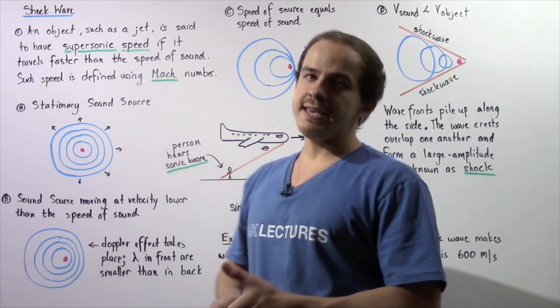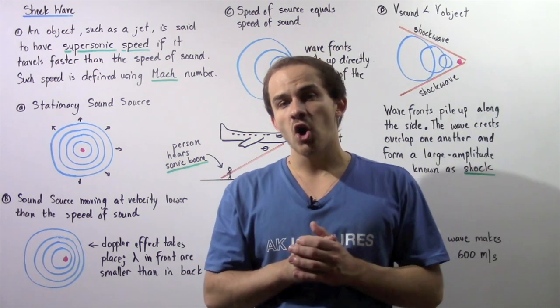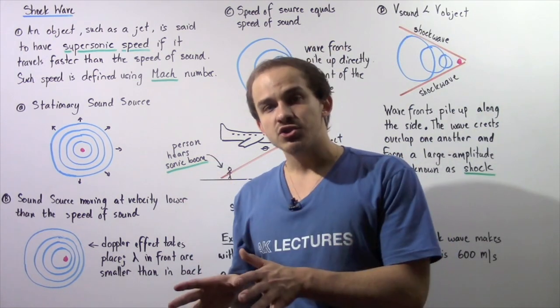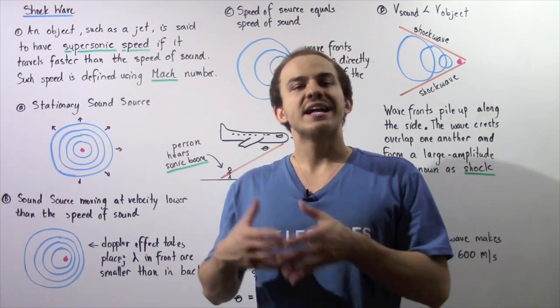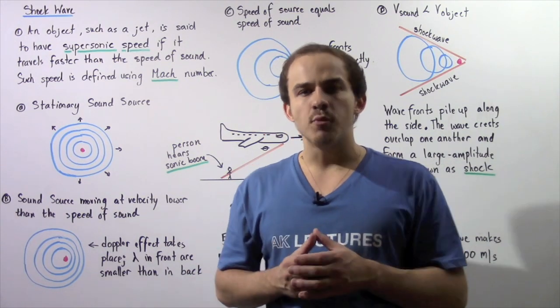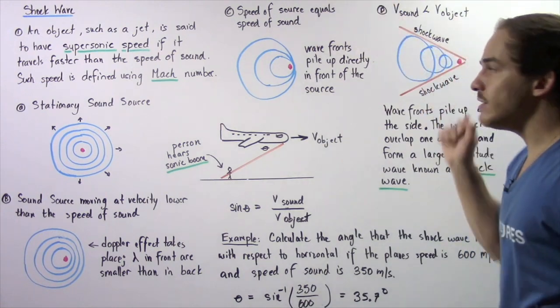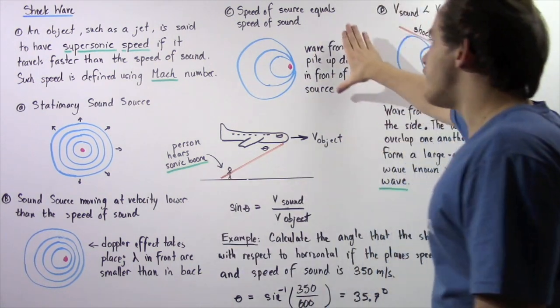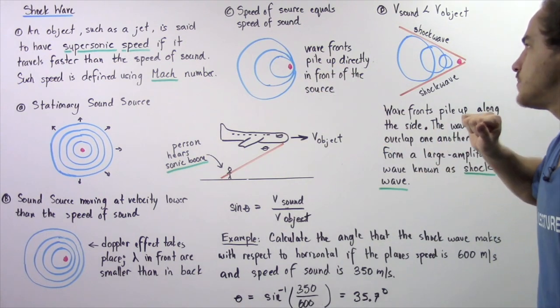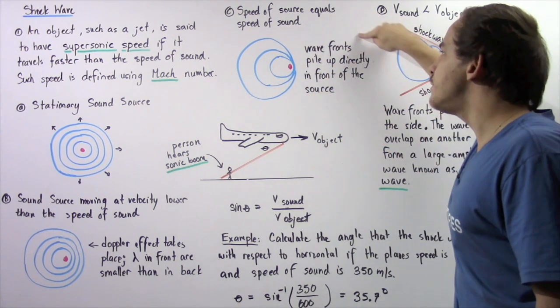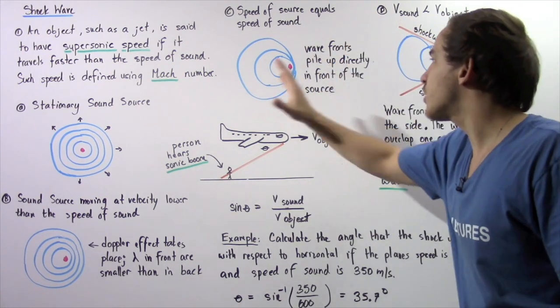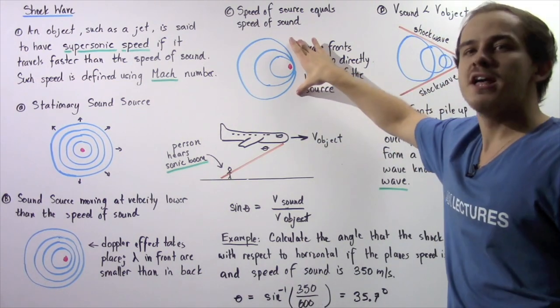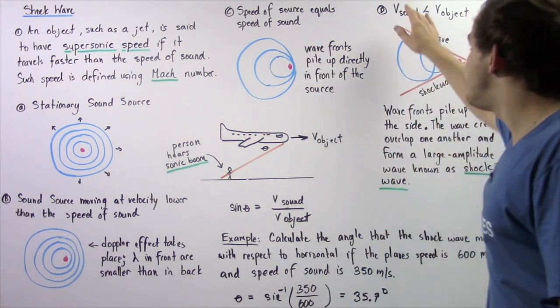Now, let's move on to case C. In case C, let's suppose that our sound source, our object that's creating the sound, is moving at a velocity equal to the velocity of sound. The following diagram will be observed. Notice the wave fronts will pile up directly in front of the sound source.